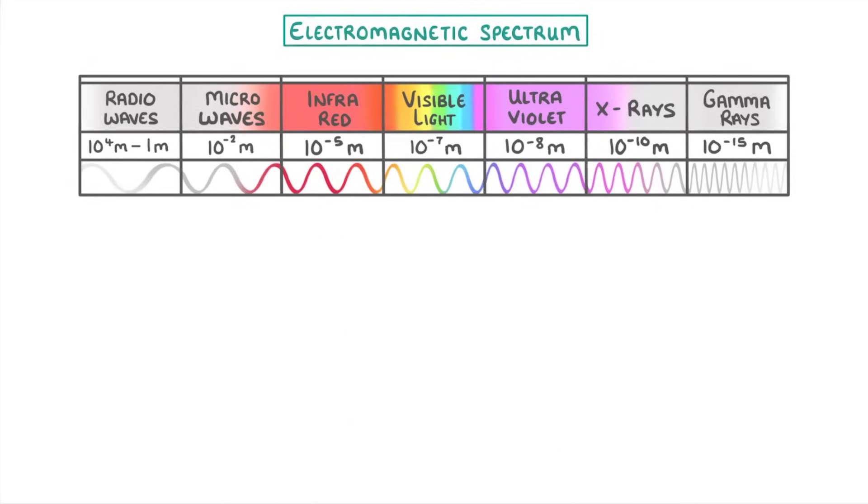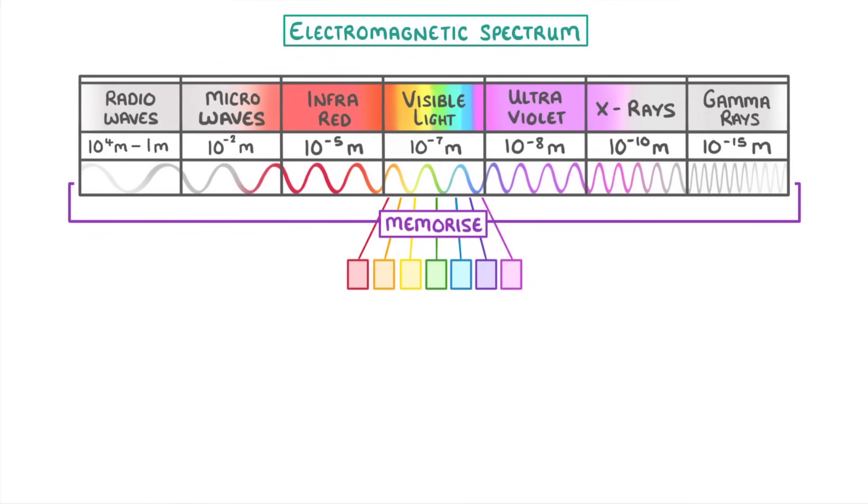Now one of the slightly annoying things about this topic is that you need to memorize the order of all the different waves in the spectrum. Personally, I think the best way to do this is to start in the middle with visible light and work your way outwards.